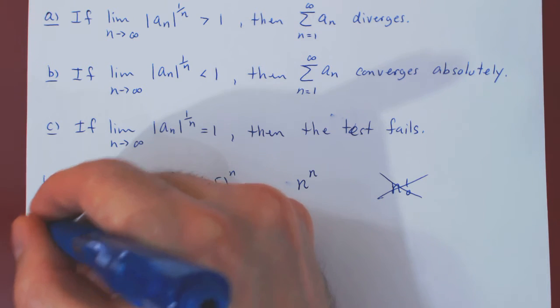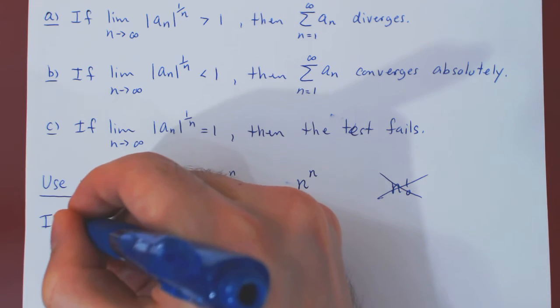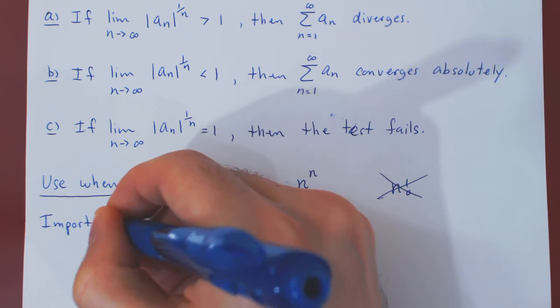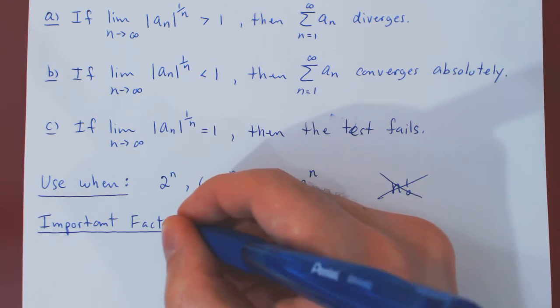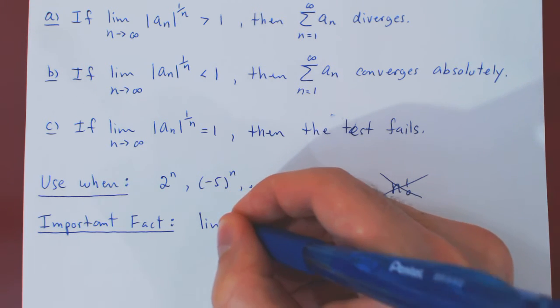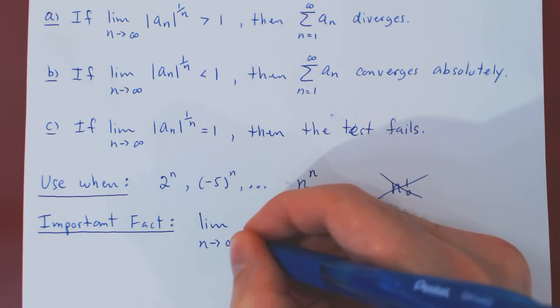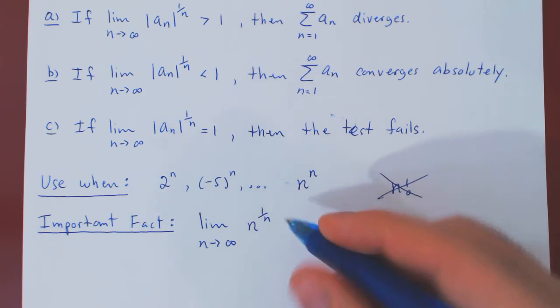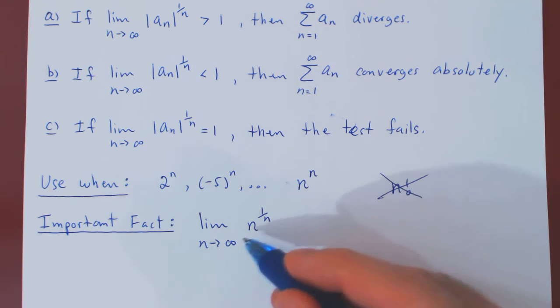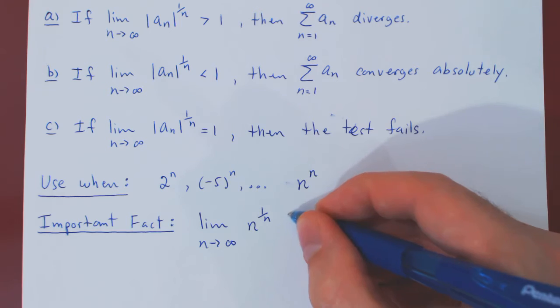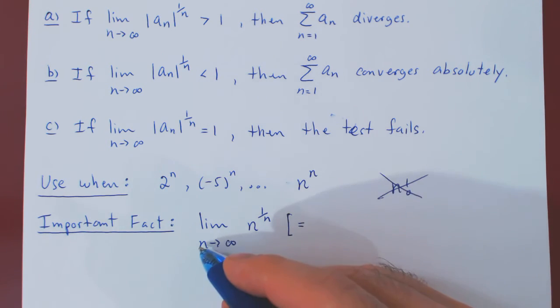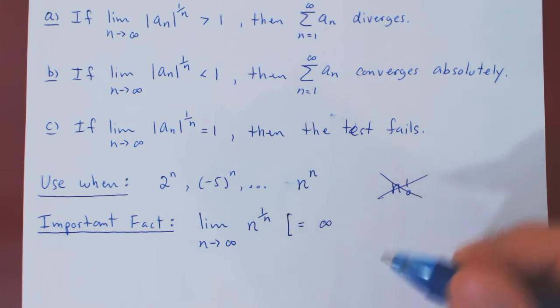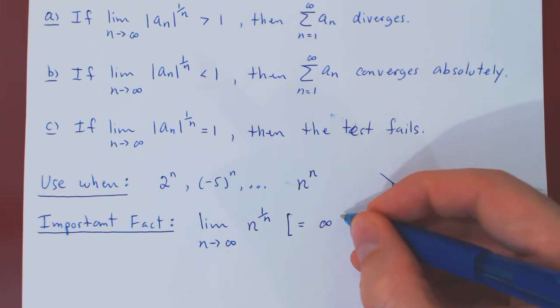This is an important fact. If you look at the limit as n tends to infinity of n to the 1 over n, so the nth root of n as n tends to infinity, this is not a trivial limit. If we look at our case, as n tends to infinity, our base tends to infinity, but the exponent 1 over n tends to 0.